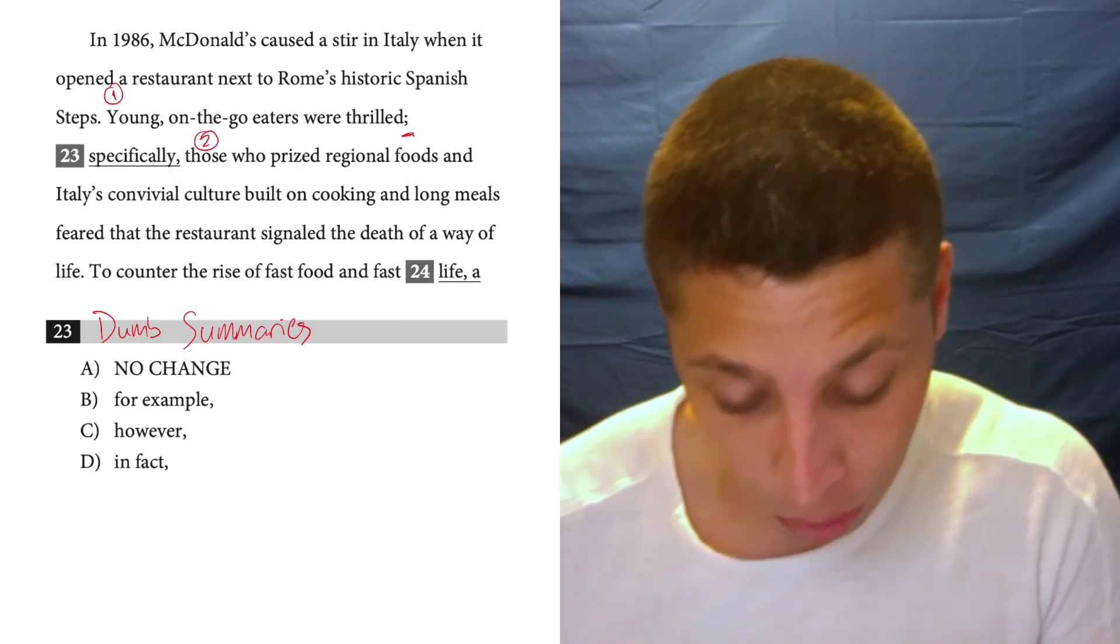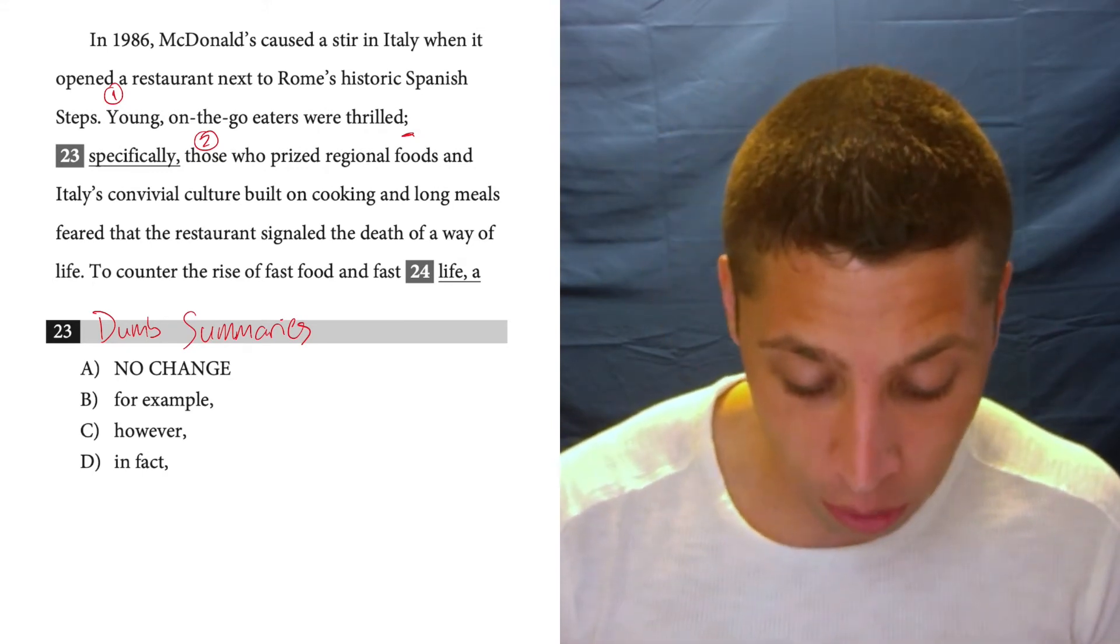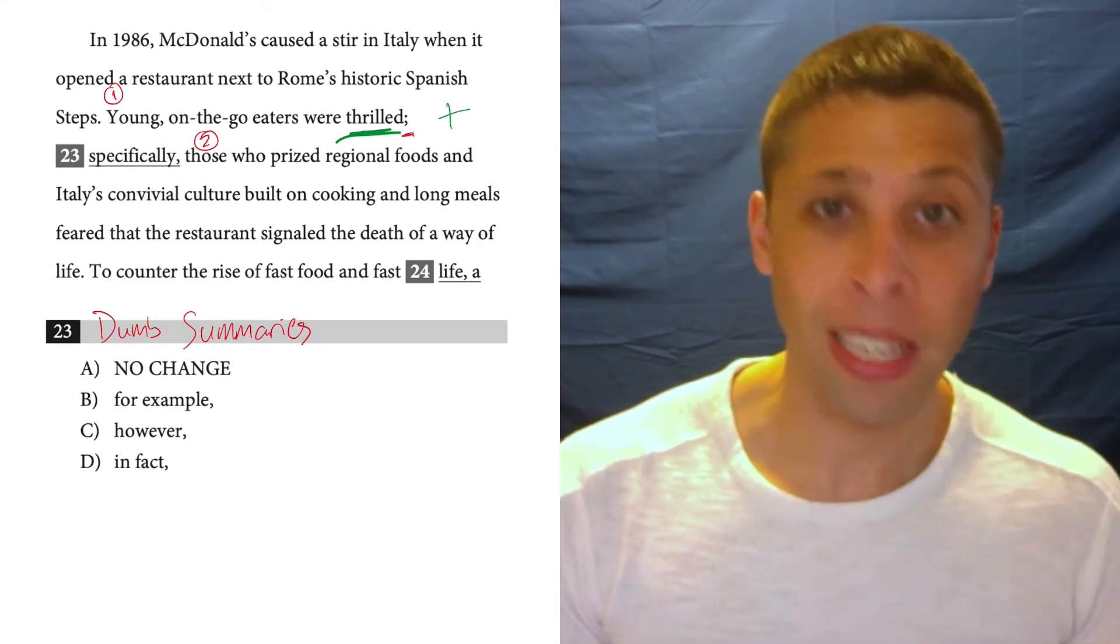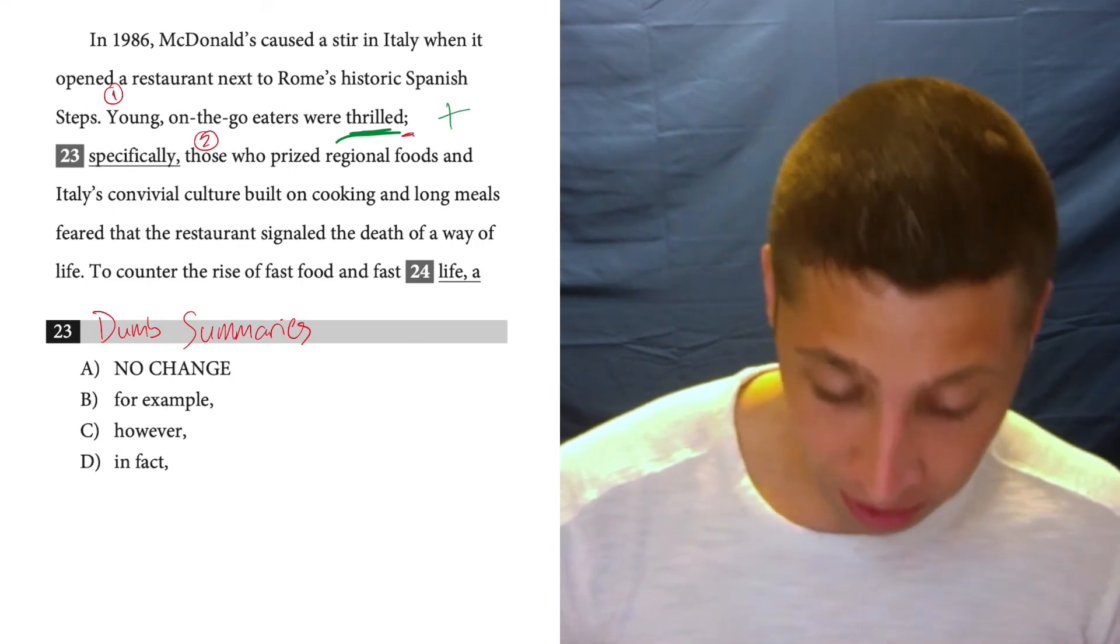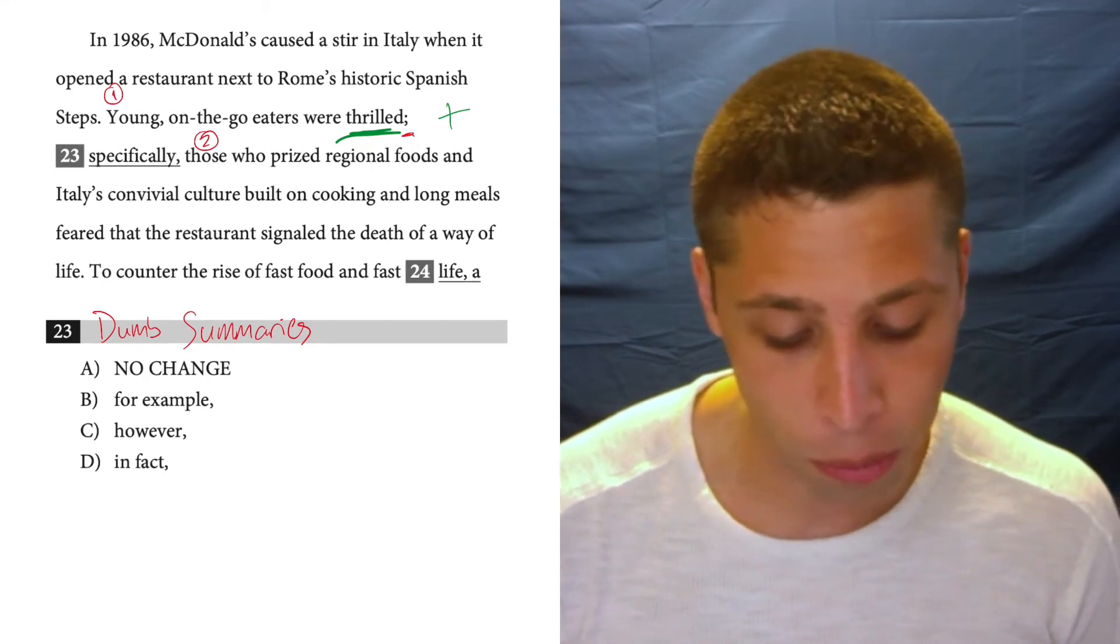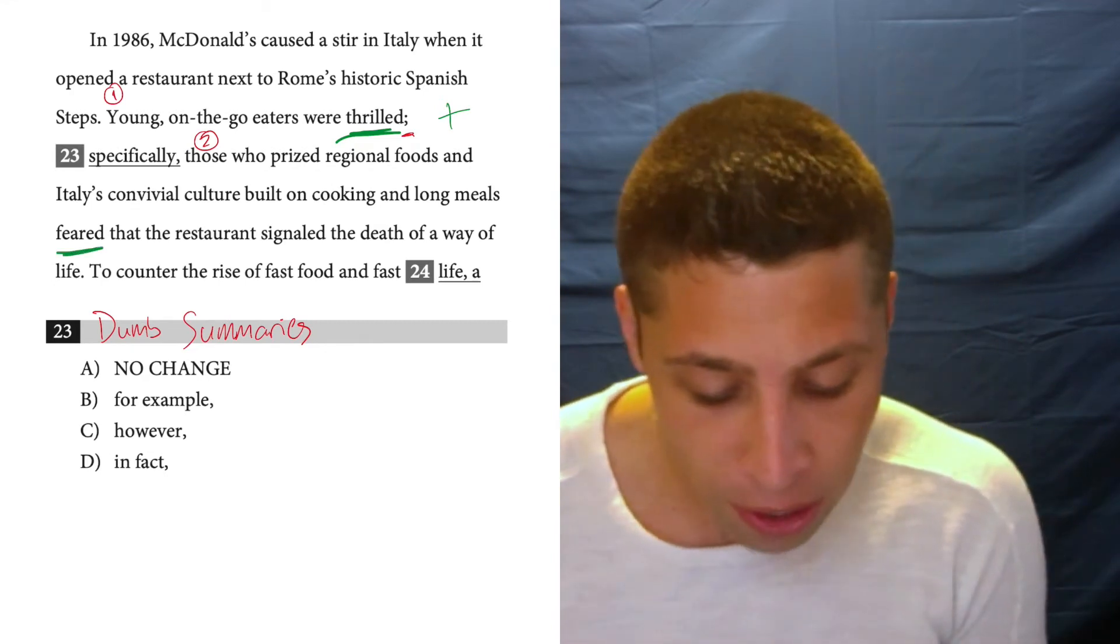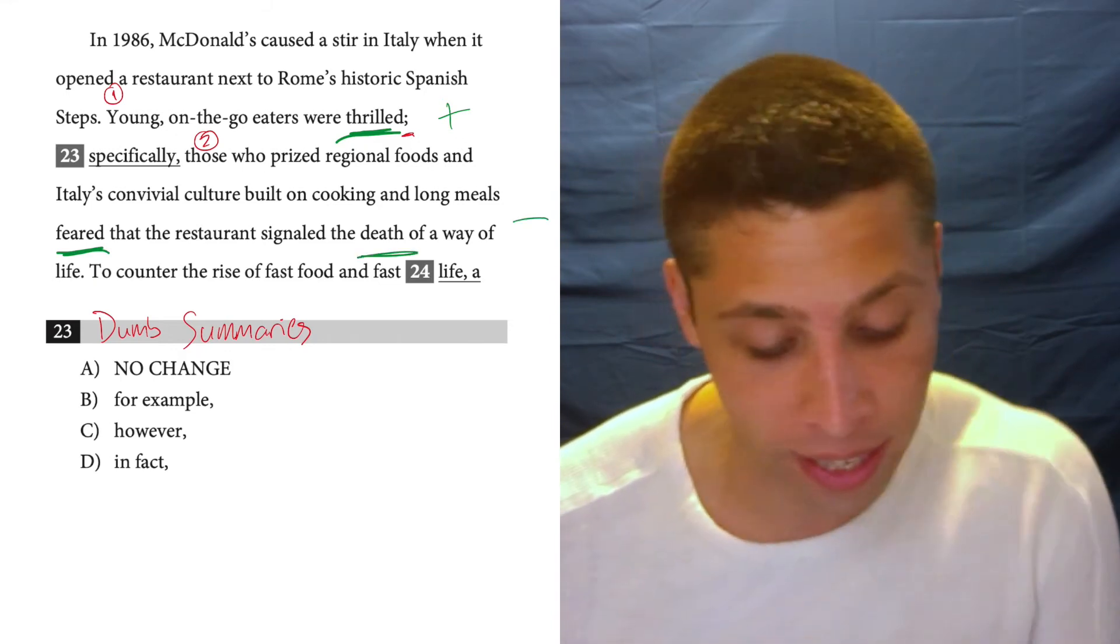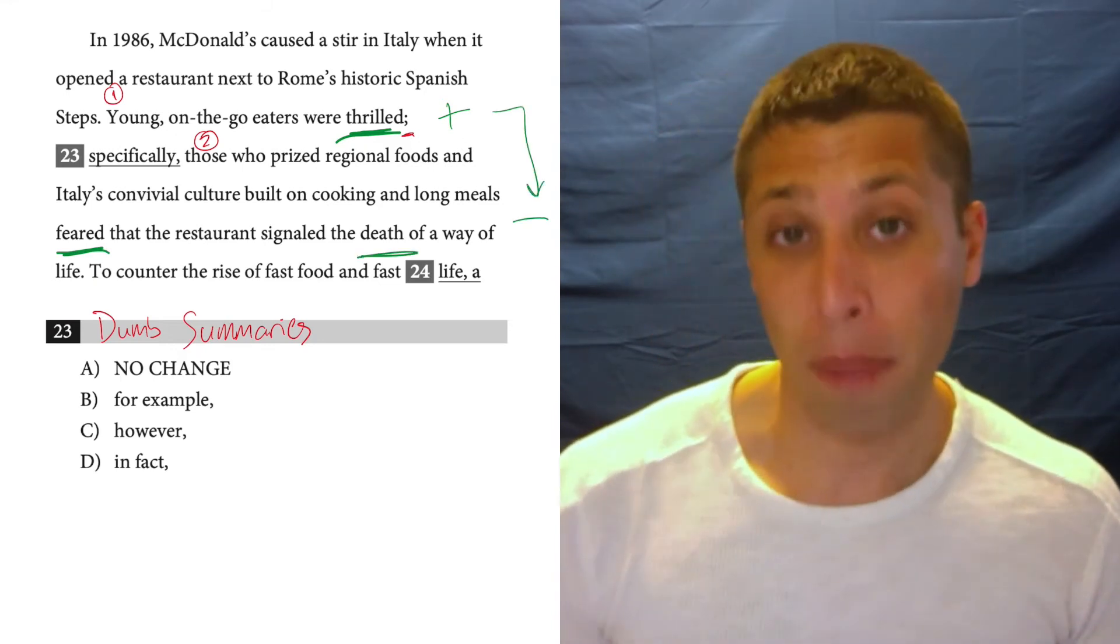So what's the first one saying? Young on-the-go eaters were thrilled. Well, thrilled seems positive. Simple enough. Then for the second part, those who prized regional foods and Italy's convivial culture built on cooking and long meals feared that the restaurant signaled the death of a way of life. So clearly that is negative. So we're shifting from positive to negative.